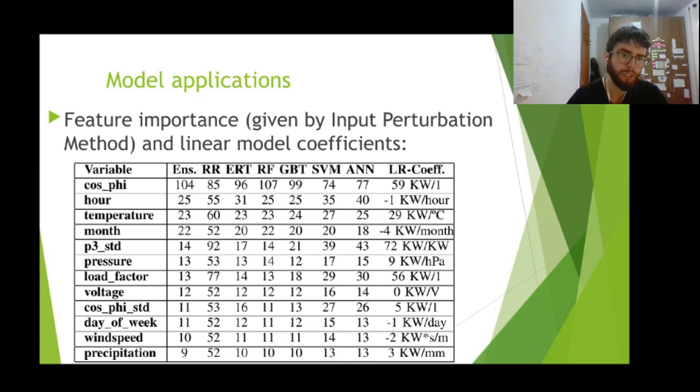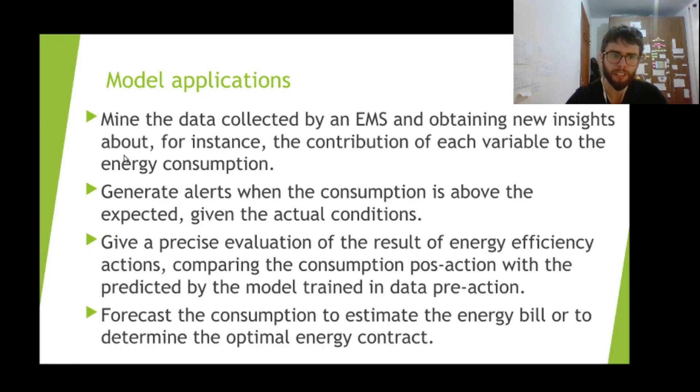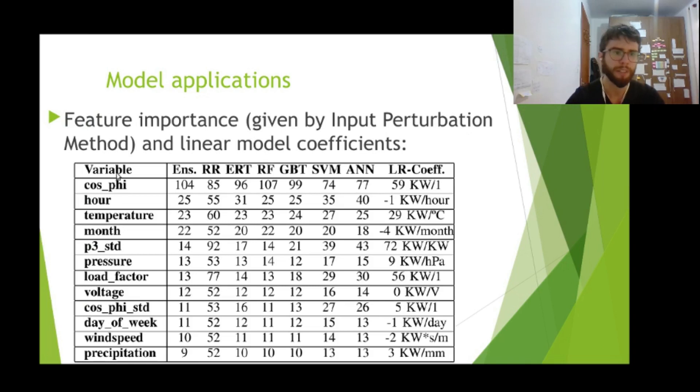But not always we will have the power factor available. So if you are trying to analyze if right now the energy is above expected, so to this specific temperature and to this specific hour of the day, how much should we be consuming, this will be the output of the system, and then we compare that with the actual consumption. It's okay, because we will have the power factor that we are consuming right now. But in other situations we will not have the power factor, then we will not be able to use this model and we will have to retrain without this variable.